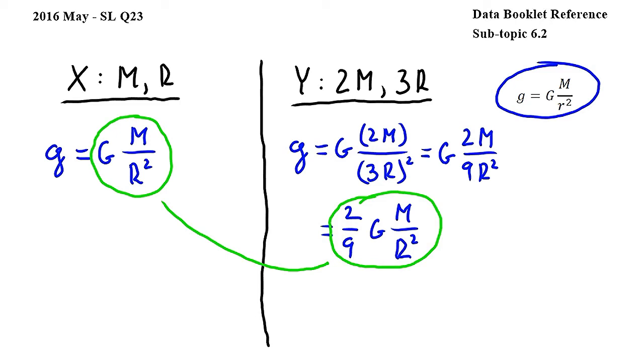We can clearly see that the gravitational field strength at Y is 2 over 9 times the gravitational field strength at X, which means that the answer to this question is A.